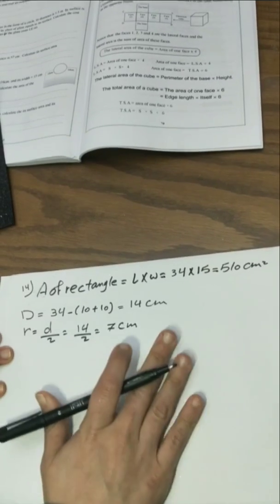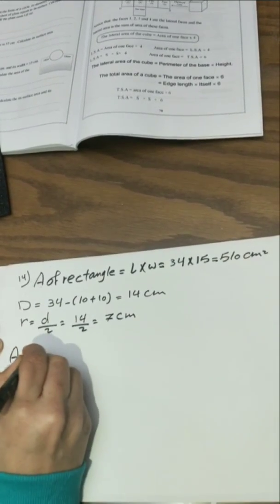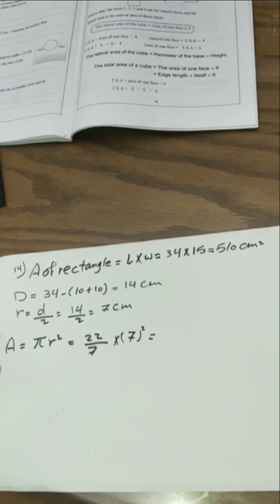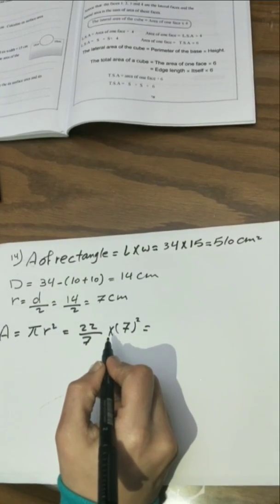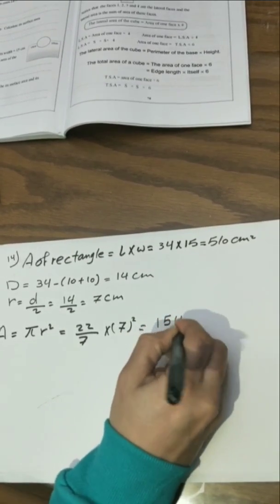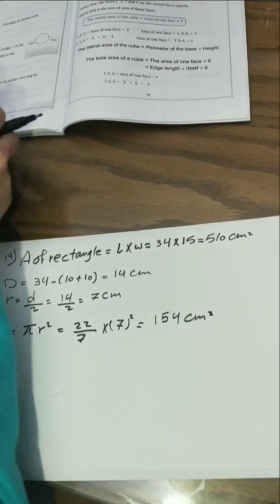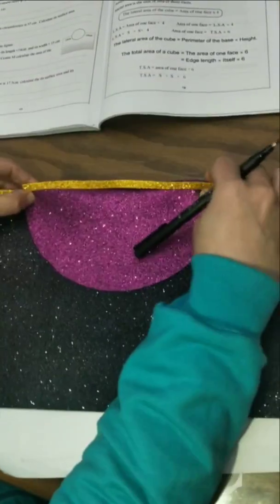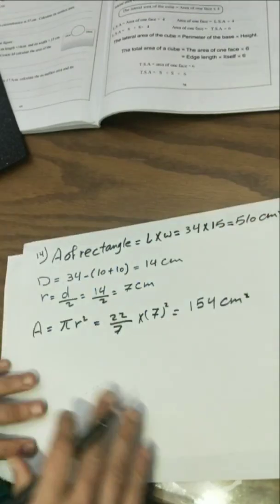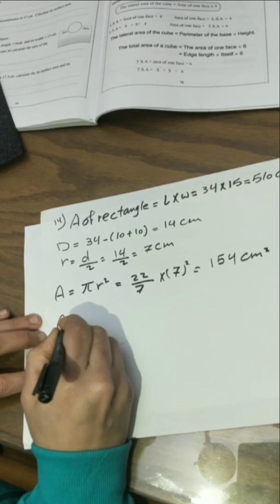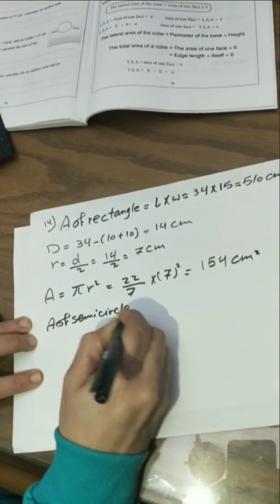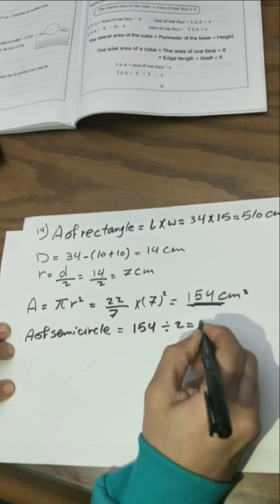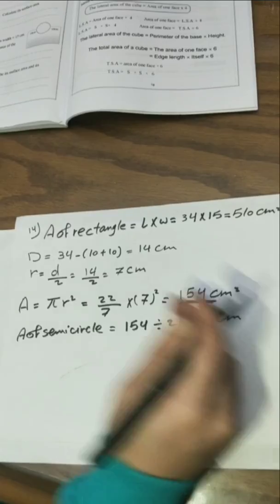I can now find the area. Area equals π r² equals 22 over 7 times 7 squared, equals 154 cm². But I don't want the total area of the circle — I just want the semicircle. So area of semicircle equals 154 divided by 2, which equals 77 cm².